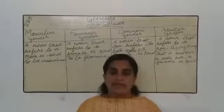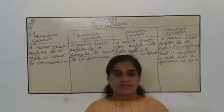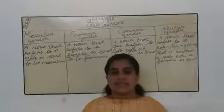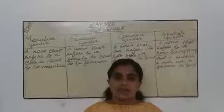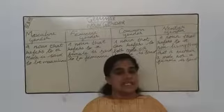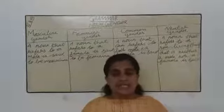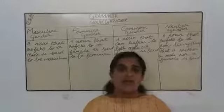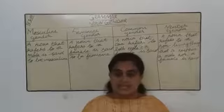Nouns can be divided into two classes: concrete nouns and abstract nouns. Concrete nouns are classified into four categories: common noun, proper noun, collective noun, and material noun. Abstract nouns are the names of feelings, actions, or states — you can't see or touch them.